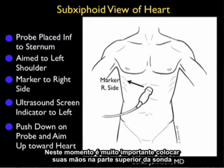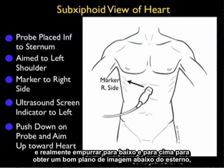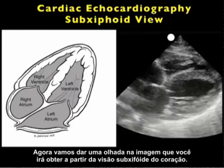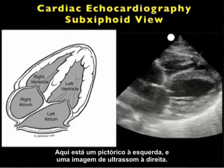It's very important to put your hands on top of the probe and really push down and up to get the good imaging plane underneath the sternum to make the angle to get a good view of the heart from this plane. Let's now take a look at the image you'll obtain from the subxiphoid view of the heart. Here's a pictorial to the left and an ultrasound image to the right.